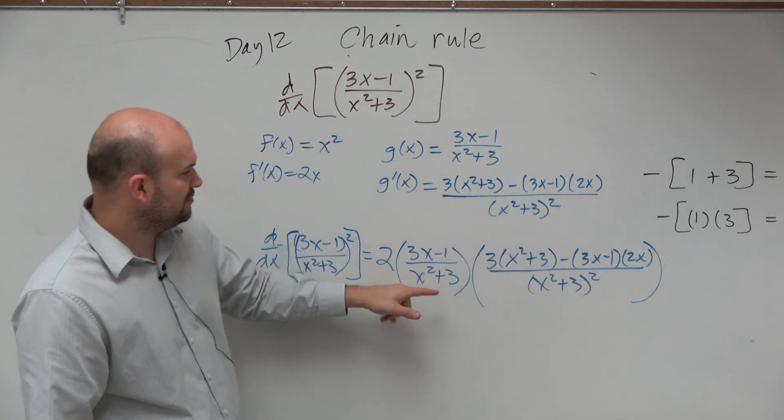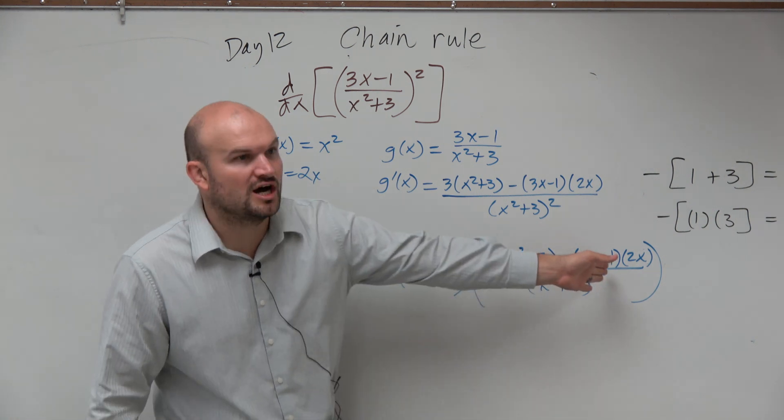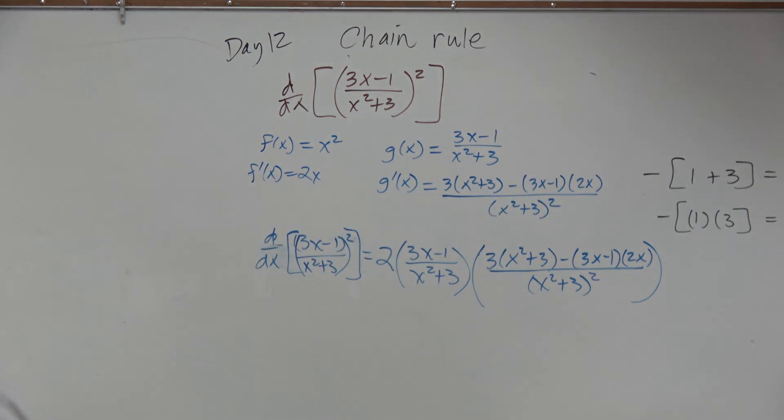You would just simplify the numerator, you could see the denominator's going to be x squared plus 3 cubed, and then just multiply across and combine like terms in the numerator. But class is about to ring, so I'm just going to have to end that problem there for you.